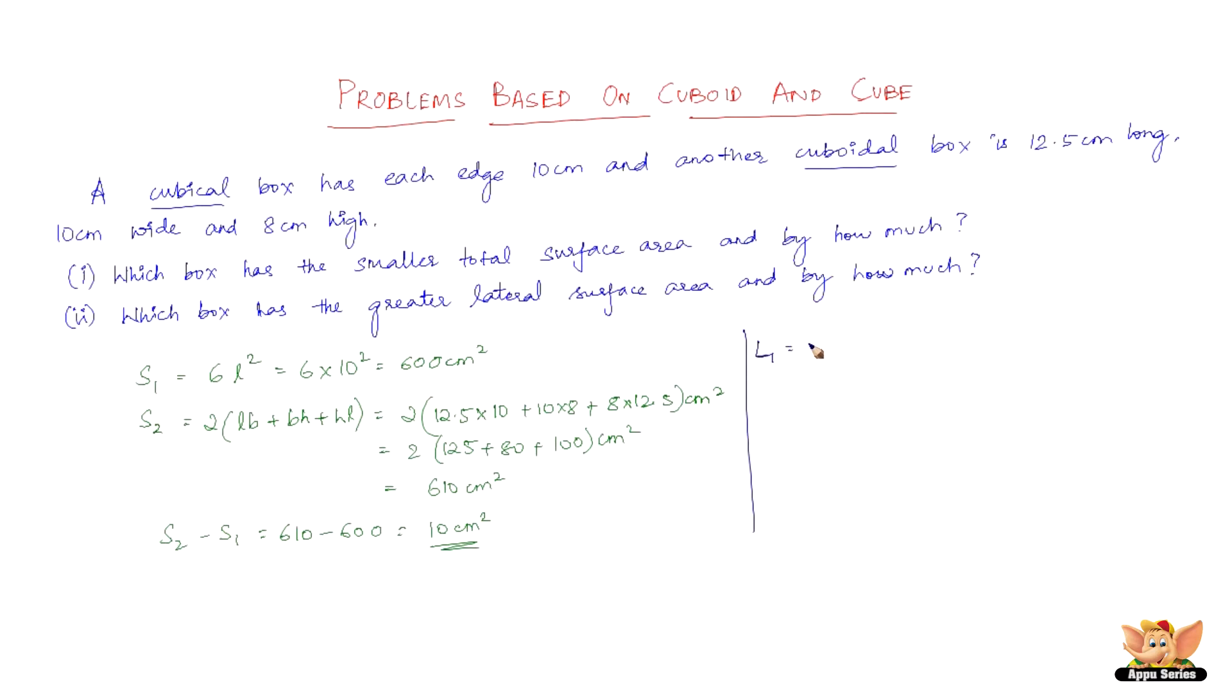So, L1 is nothing but 4 into L square for a cube. So, therefore, it is 4 into 10 square which is 400 cm square. Now, L2 for the cuboidal we have the formulae as 2 into length plus breadth into height which is nothing but 2 into 12.5 plus 10 into 8 which is 2 into 22.5 into 8 which is nothing but 360 cm square.